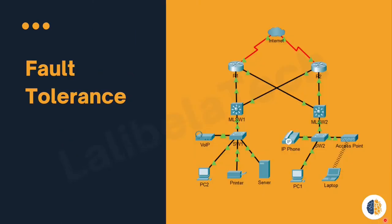Fault tolerance is built to allow quick recovery when a failure occurs. Fault tolerant networks depend on multiple routes between the source and destination of a message. If one path fails, the messages are instantly sent over a different link. Having multiple paths to a destination is known as redundancy.